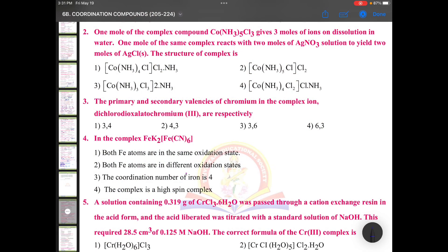One mole of the complex compound Co(NH3)5Cl3 gives three moles of ions. Three moles of ions - you see, this can be your answer? This is not your answer because it can't give any ions here.